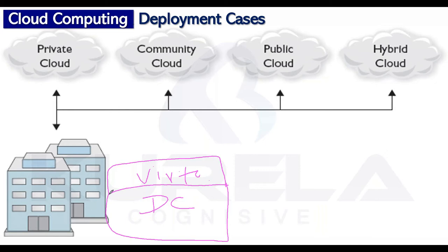You suggest: 'Why don't we have a self-service portal where teams can serve their own requests? For example, if they need servers, instead of submitting a ticket to the virtualization team, they can do it on their own through a self-service portal.' Your manager says yes — do a POC, show the results, and you'll be given permission to roll it out to production.